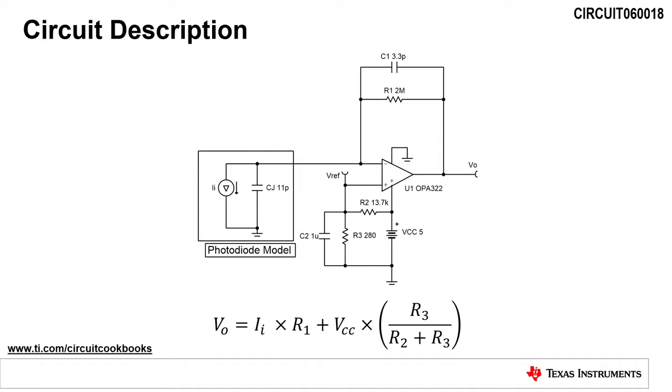Photodiode amplifier circuits are used to convert and amplify the light-dependent input current from a photodiode to an output voltage. The current-to-voltage gain of the photodiode amplifier circuit is set by the feedback resistor R1.